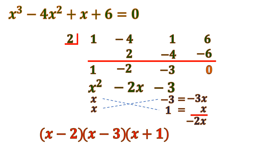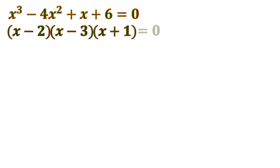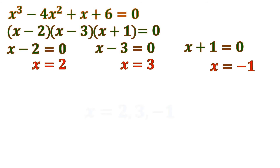Going back to the given, the factored form is (x minus 2)(x minus 3)(x plus 1) equals 0. To make the whole expression 0, either x minus 2, x minus 3, or x plus 1 equals 0. Solving: x equals 2, x equals 3, and x equals negative 1. So the roots of this polynomial equation are 2, 3, and negative 1.